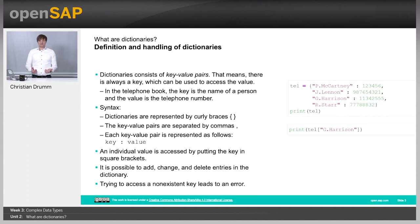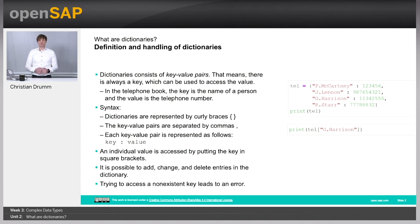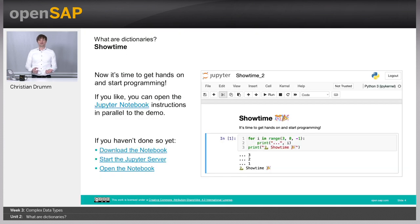In order to access the individual elements, we use square brackets again. But instead of putting an index, we put the key of the element. Dictionaries are mutable. We will see that it's possible to add elements, to delete elements, or to modify elements. We will also see that trying to access a dictionary with a key that doesn't exist leads to an error. So after this introduction, let's head over to the Jupyter notebooks and see how we can use dictionaries in Python.